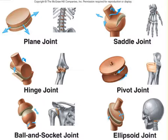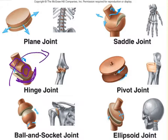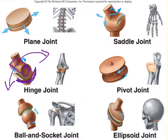Next is the hinge joint. A cylindrical bone fits into a trough-like dip bone, so that bone can rock back in only one plane — like a door swinging open and closed. You'll find this type of joint in the elbow, the knee, and the interphalangeal joints between the finger bones. You can also think of the temporomandibular joint, or jaw joint, as a hinge joint.